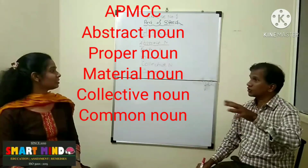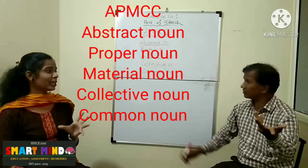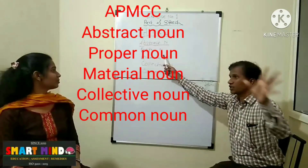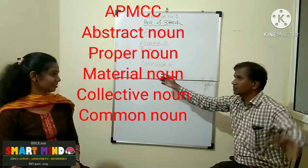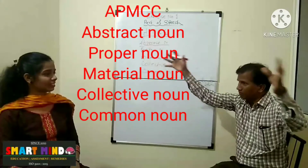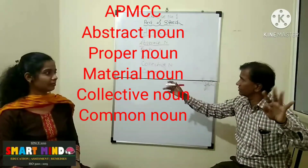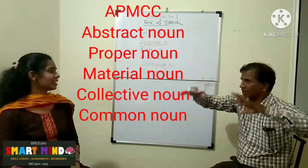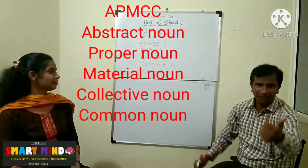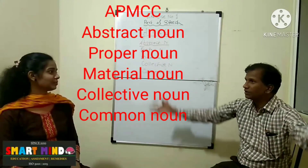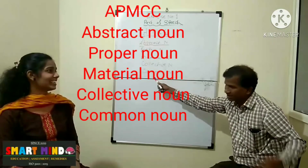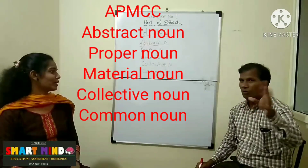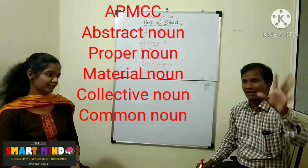Abstract — the things which we cannot touch. Proper means specific name. Material means any material — gold, silver, whatever. Collective means gathered together and given one name. Best example: family — family means family members gathered together. Common noun means common: boy, girl, river — like that.